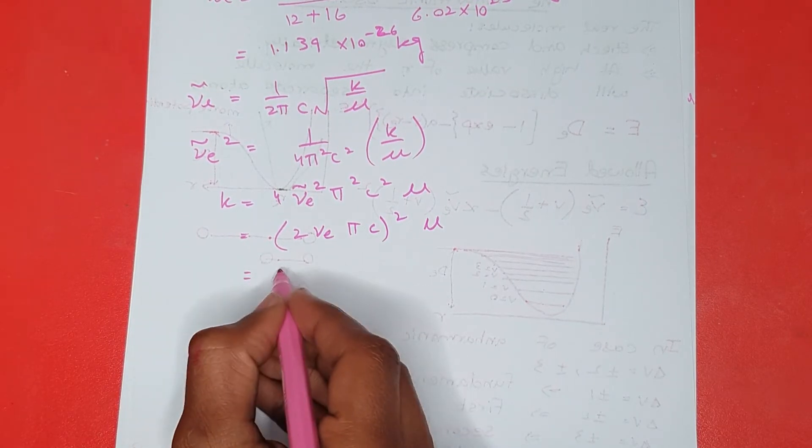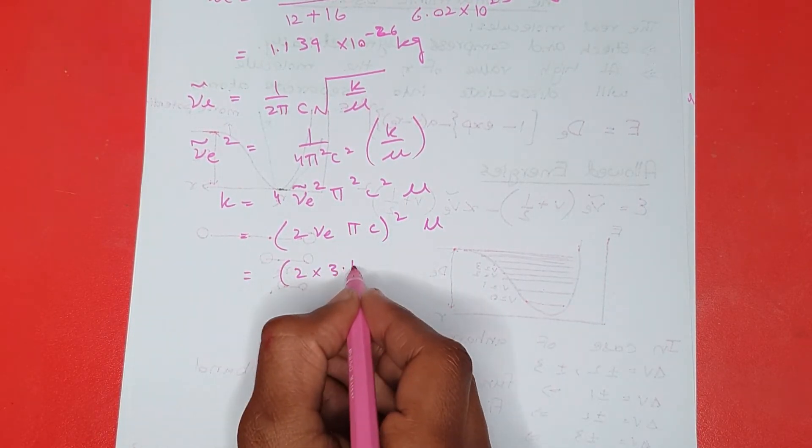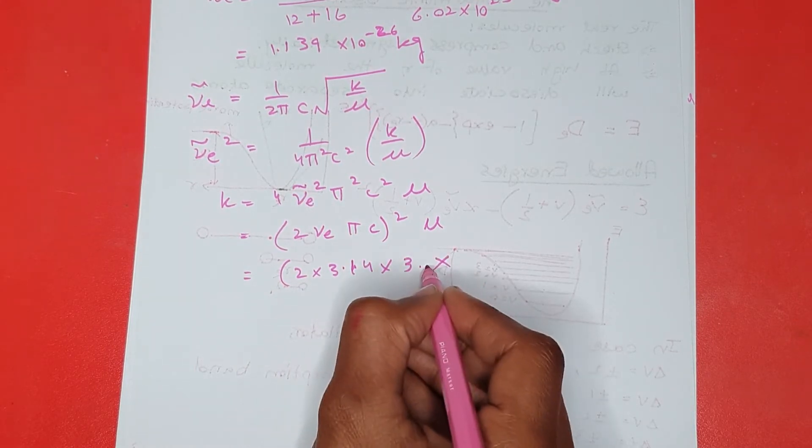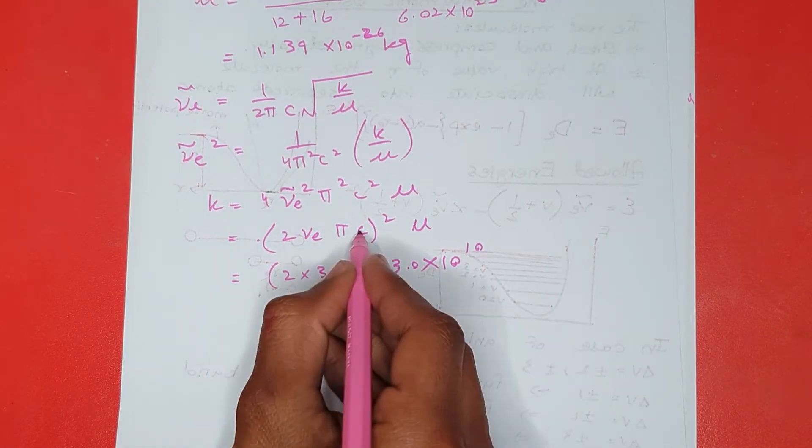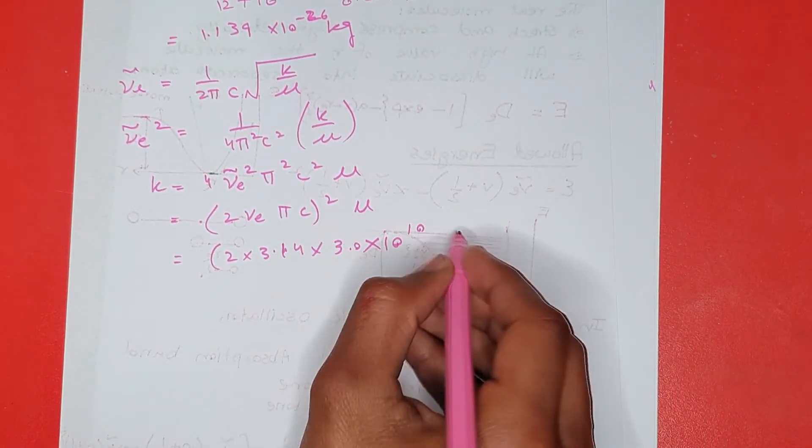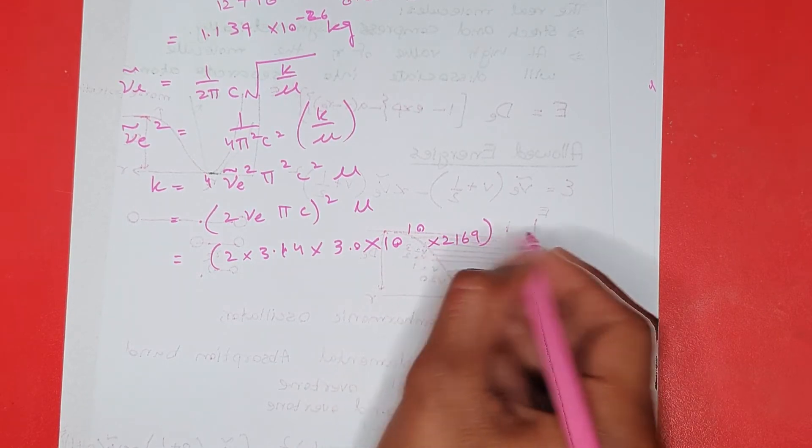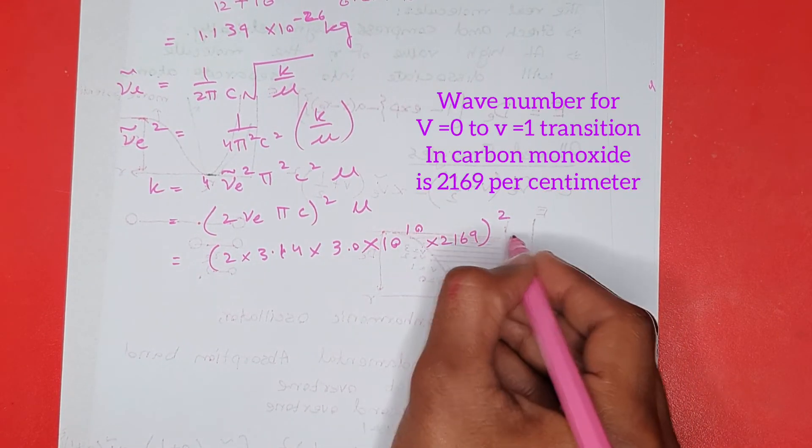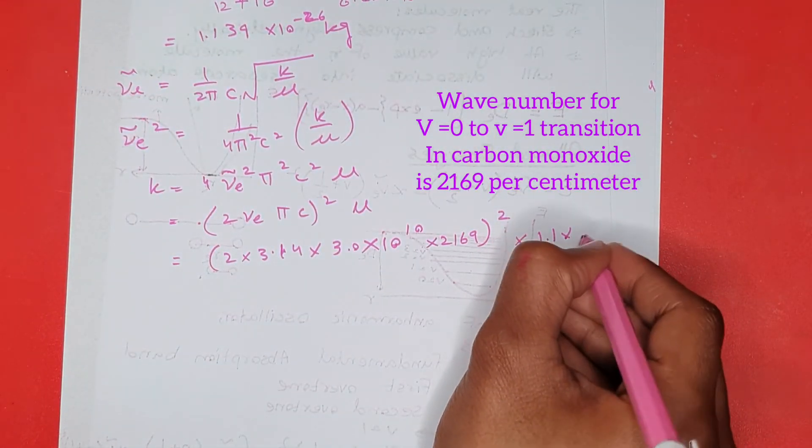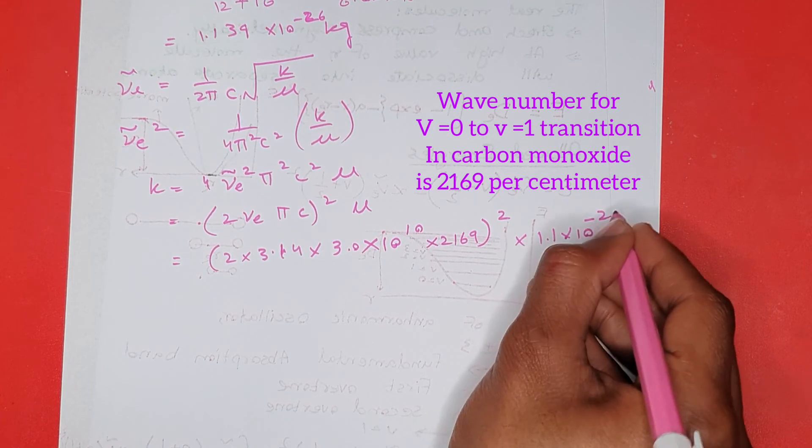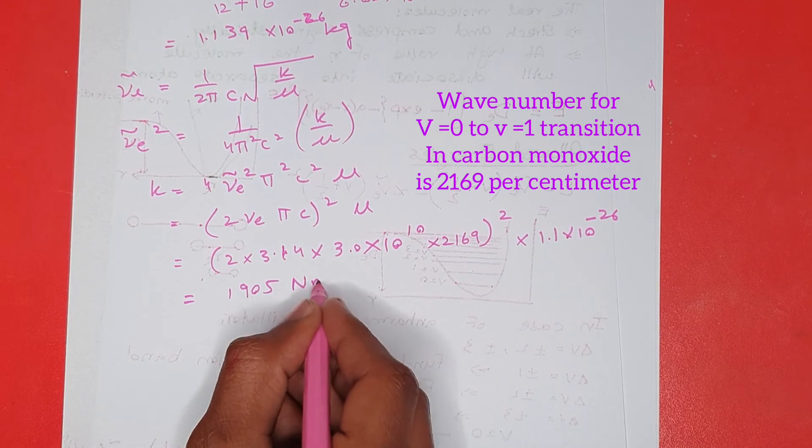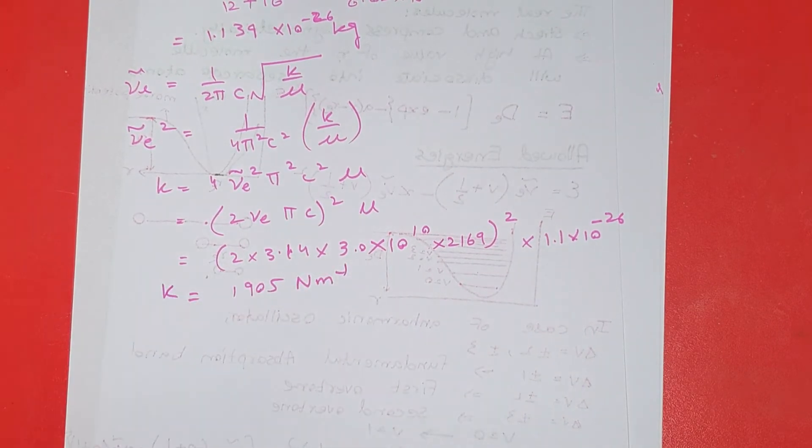Now 2 multiplied by pi, value of pi is 3.14, again I have 3.0 into 10 power 10, this is the speed of light C, and again what I have next is 2169, and 2169 is actually the wave number. Again I have this square, and in place of mu, I am just going to write the answer for mu, that was 1.1 into 10 power minus 26, and the answer of all of this part comes to be equal to 1905 newton per meter. That was the force constant.